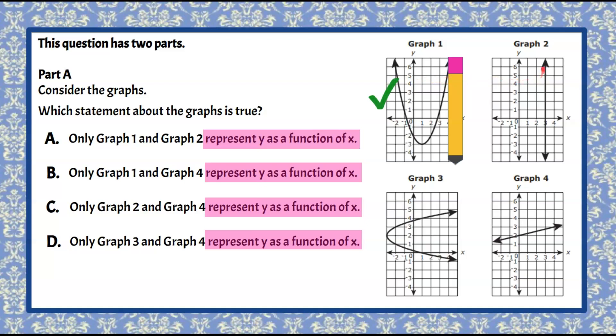On graph two we can see that as soon as we put our pencil vertically on our graph, it passes through every point on this line. So therefore graph two fails the vertical line test because more than one point is covered up with the pencil.